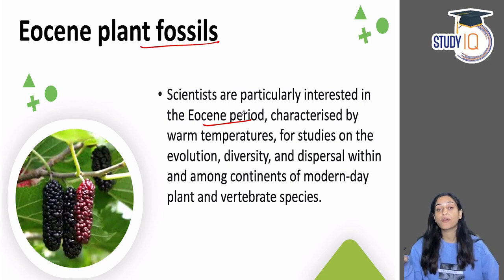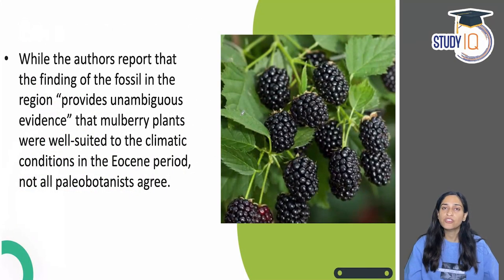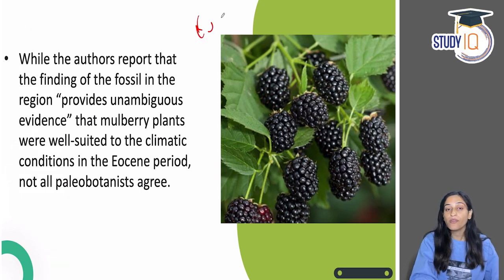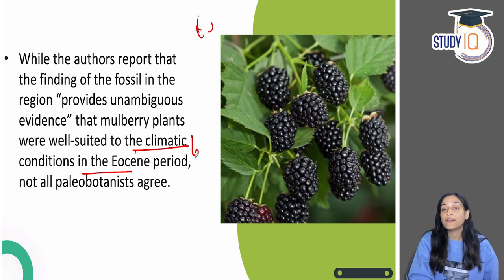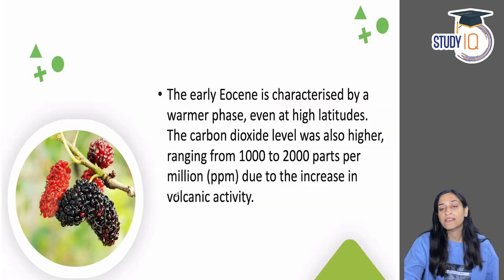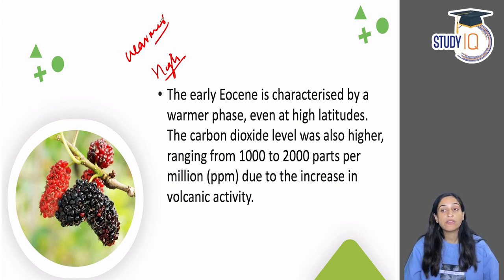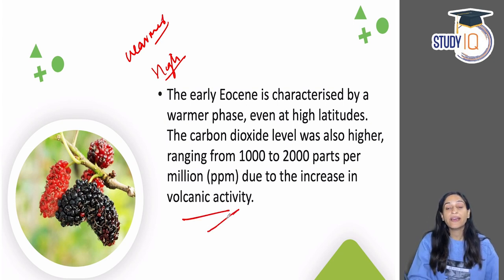During the Eocene, temperatures are believed to have been warm, and it is considered how evolution happened, how diversity was, and how our modern-day plants and vertebrate species evolved from that time to their present form. The Eocene is considered a warm phase — CO2 levels at that time may have been high, around 1000 to 2000 parts per million, because volcanic activity was very high then. Not all palaeobotanists agreed fully, and more information was needed.